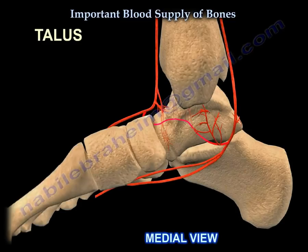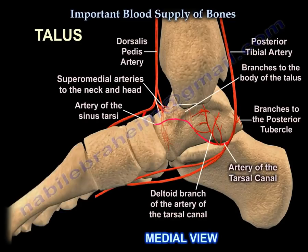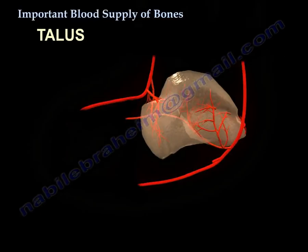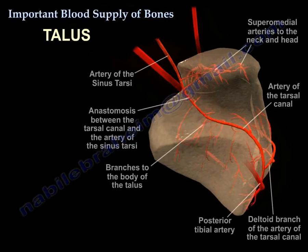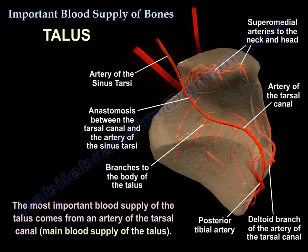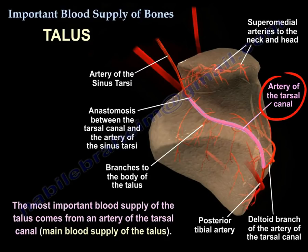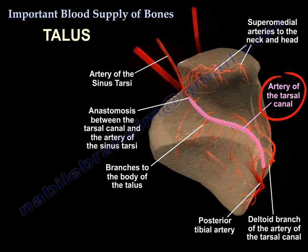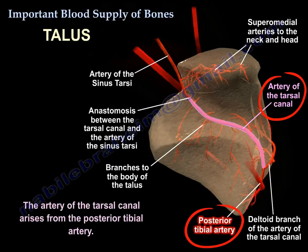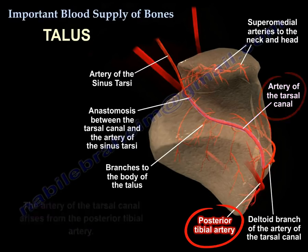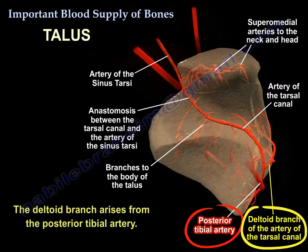If we take the talus, the blood supply is illustrated here. The most important blood supply of the talus comes from the artery of the tarsal canal, which arises from the posterior tibial artery. The deltoid branch also arises from the posterior tibial artery.